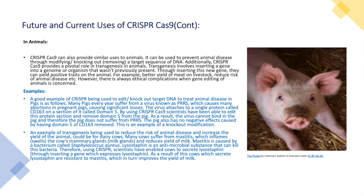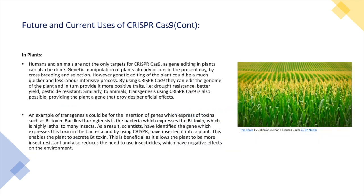These are two examples of how CRISPR-Cas9 is used today. Humans and animals are not the only targets for CRISPR-Cas9, as gene editing in plants can also be done. Genetic manipulation of plants already occurs through crossbreeding and selection; however, genetic editing using CRISPR-Cas9 could be a much quicker and less labour-intensive process.